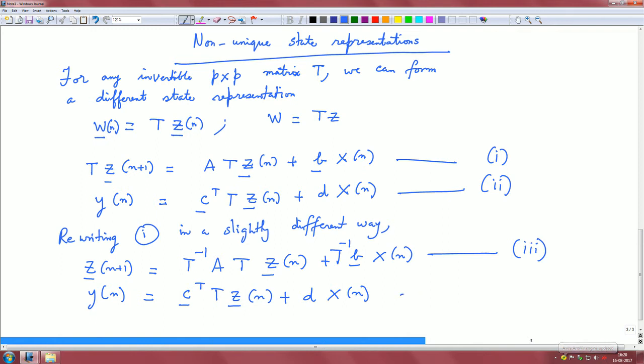Now, if I ask you for the state variable representation of this system, where w and z are two different state variable representations linked via the transformation T, the parameters are as follows.